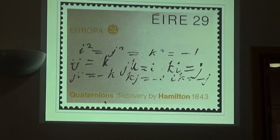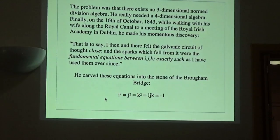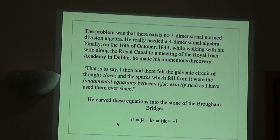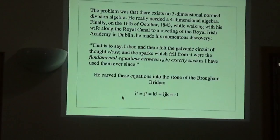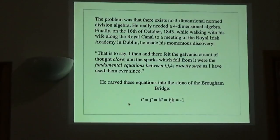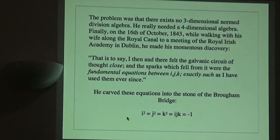The story is that he worked on this problem of finding a way to multiply in three space for many years, and then finally realized he needed a fourth dimension to make the problem fit. He was walking, and then he said, 'I then and there felt the galvanic circuit of thought close, and the sparks which fell from it were the fundamental equations between I, J, and K, exactly such as I have used them ever since,' and he carved the equations onto the bridge.